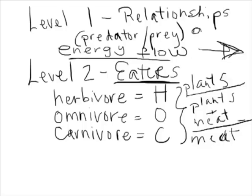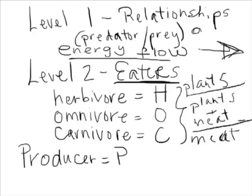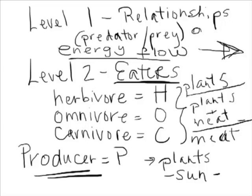The other thing we need to add is one more different type — but it might not be the type of eater you'd think of. This type is a producer, and a producer is going to be represented by a P. That is going to be plants themselves — anything that receives energy from the sun is going to be labeled with a P, because they produce their own energy.